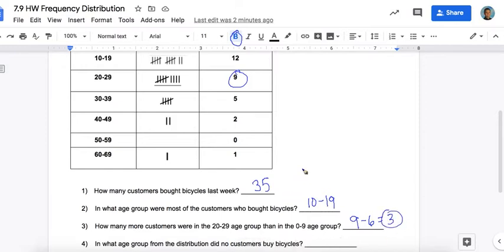Question four: what age group from the distribution did no customers buy bicycles? That was right here, which is 50 to 59. That was the age group.